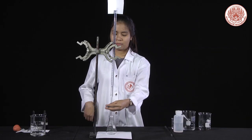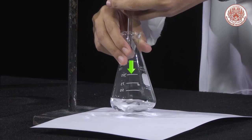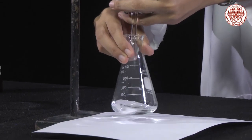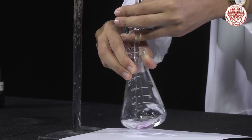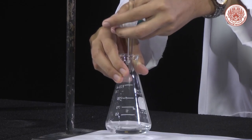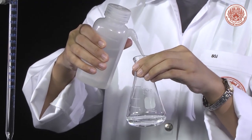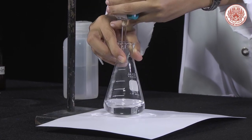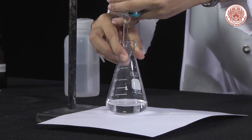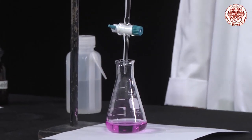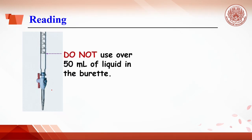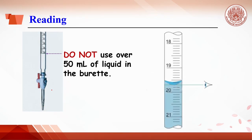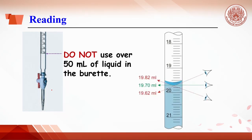Titration starts by opening the stopcock and allowing the titrant to drop into the titrand in the Erlenmeyer flask. During dropping, the flask is regularly swirled. When the equivalence point is near, the indicator color will be seen when the titrant hits the solution in the flask, but the color disappears upon stirring. At this point, students may wash the flask with distilled water and continue titrating, stopping when the solution turns from colorless to pale pink — this is the end point. Do not use more than 50 ml of sodium hydroxide from the buret; if more is needed, refill and read the volume from the bottom of the meniscus with eyes at the same level, otherwise the result will be erroneous.